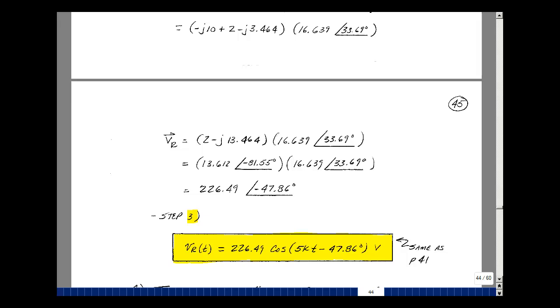Lastly, to come into the time domain, all I need to do is put the cosine of omega t between the magnitude and the angle. So my answer then is 226.49 times the cosine of the quantity, 5kt minus 47.86 degrees. And the units here will be volts. This is the same answer we had on page 41. This is an example using source transformations.